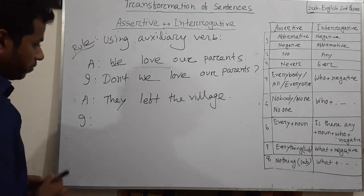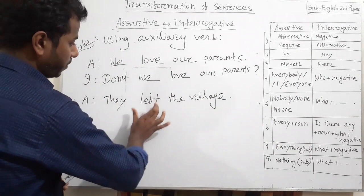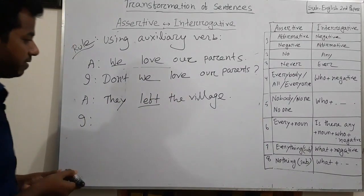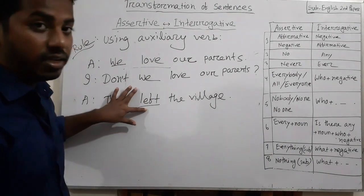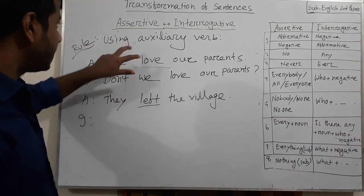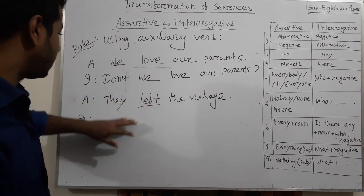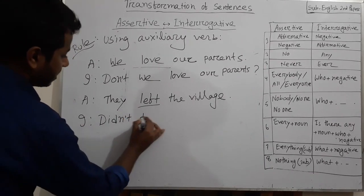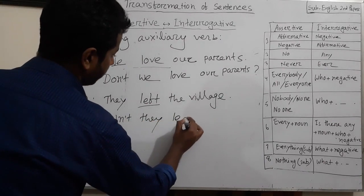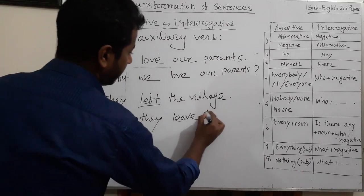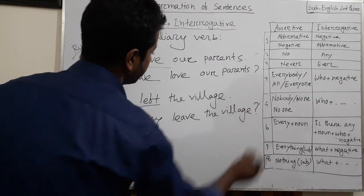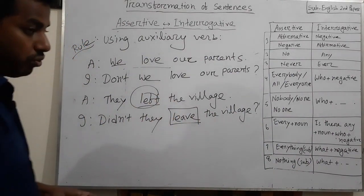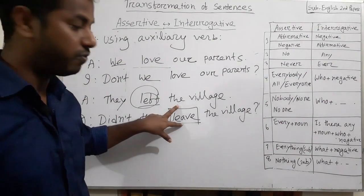Another example: 'They left the village.' There is no auxiliary verb. It is past indefinite tense, so we bring auxiliary verb 'did'. As it is an affirmative sentence, in interrogative it will be negative: 'Didn't they leave the village?' Remember: after do, does, did, the main verb will be in base form — that is why 'left' becomes 'leave'.